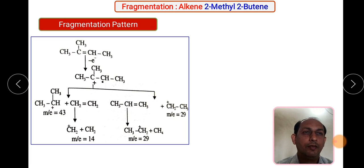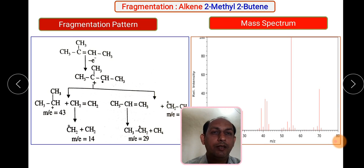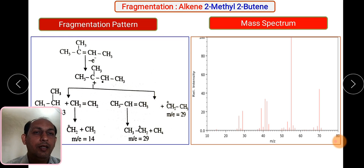In case of 2-methyl-2-butene — carbons numbered 1, 2, 3, 4 — after loss of one electron the molecular ion peak appears at 70. It then fragments to give 71, which results into 43, then 29, and so on with further peaks at values like 14 and 29. The most stable fragment appears at the highest intensity peak. This is how you get the fragmentation pattern for 2-methyl-2-butene.